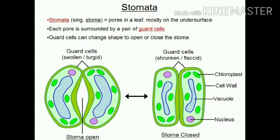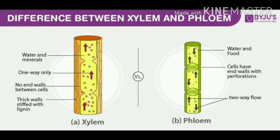Carbon dioxide enters the leaf through tiny pores called stomata, which are found on the underside of the leaves. Gases move in and out through stomata. Water is absorbed from the soil by small root hairs in the ground.